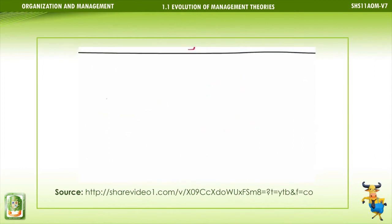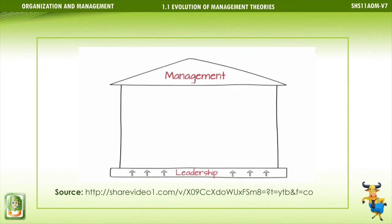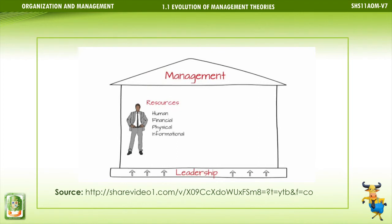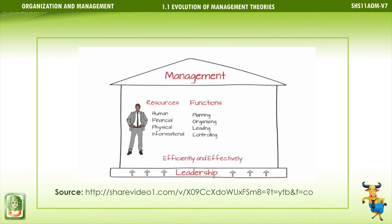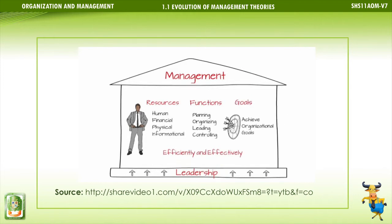In summary, management takes place within an organization or structure and is positioned at the top under which everything falls, whereas leadership is the foundation upon which an organization is built. Within the organization or structure, managers allocate resources — human, financial, physical, and informational — using the functions of planning, organizing, leading, and controlling, to most efficiently and effectively achieve organizational goals.